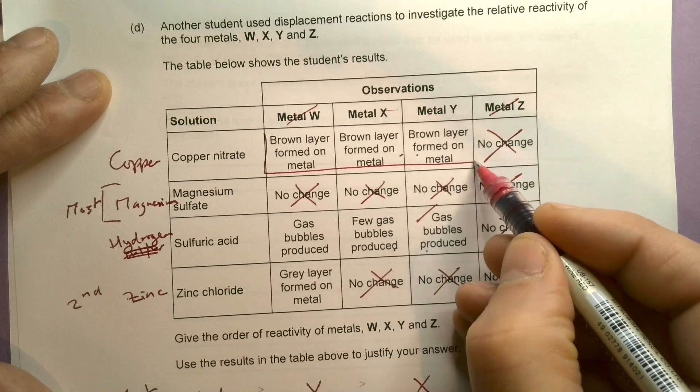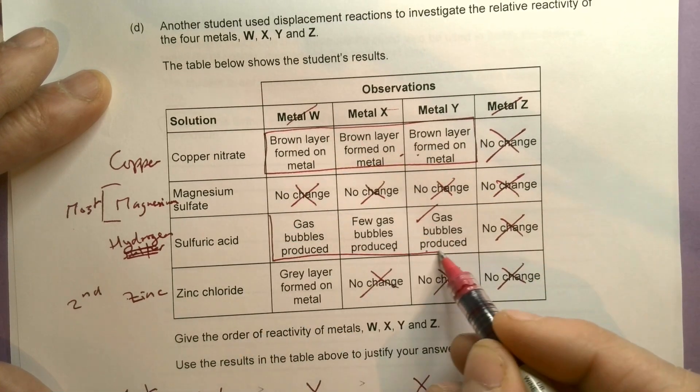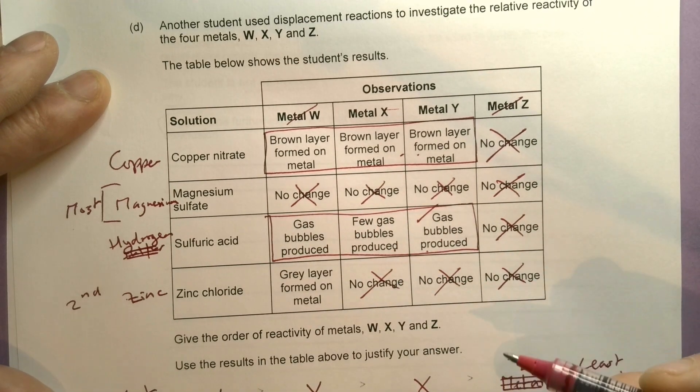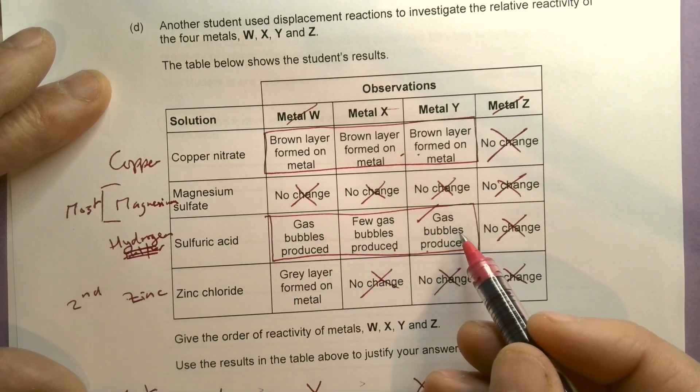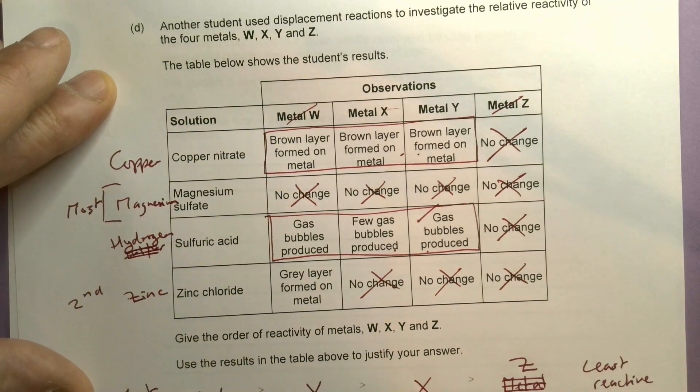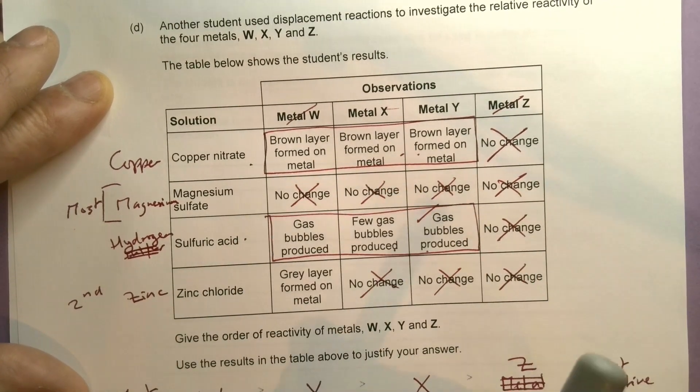Copper reacts with three things and hydrogen also reacts with three things. So what we'd need to do here is to find out the difference between copper and hydrogen. We'd need to react one more thing, and the easiest way to do that would be to add sulfuric acid and copper together.